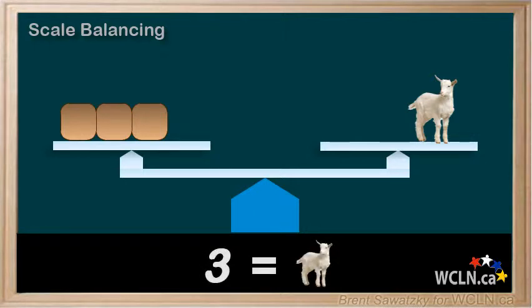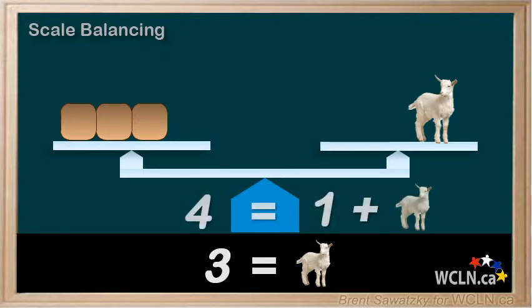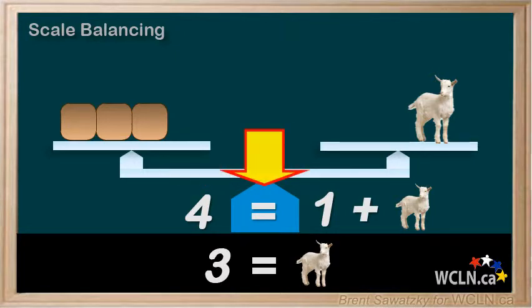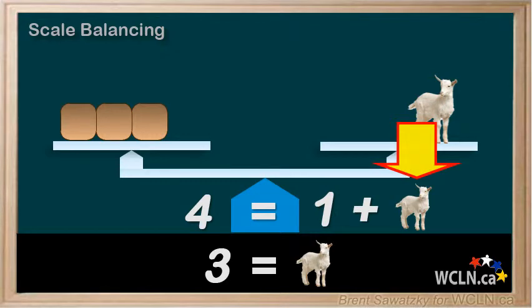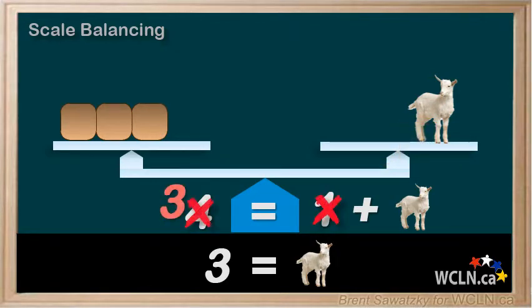Now if we made it into an equation, it would have looked like this: four on one side, an equal sign in the middle, and one block and a goat on the other side. We removed or subtracted the one from both sides, and in the end we're left with the goat by itself and three.